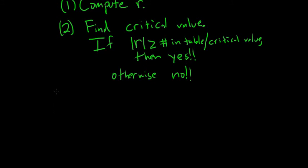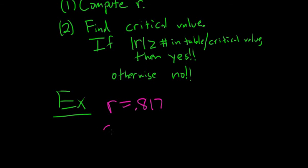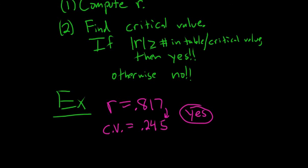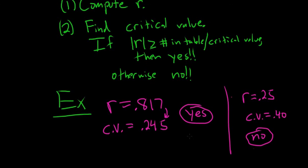Let's do a simple example. Say r is 0.817 and the critical value is 0.245. In this case r is bigger, so the answer is yes — there is a straight line pattern; r is significant. If instead r was 0.25 and the critical value was 0.40, then r is not bigger, so the answer would be no. If it's bigger, it's yes. Most of the time it's yes — if you ever have to guess, just guess yes.